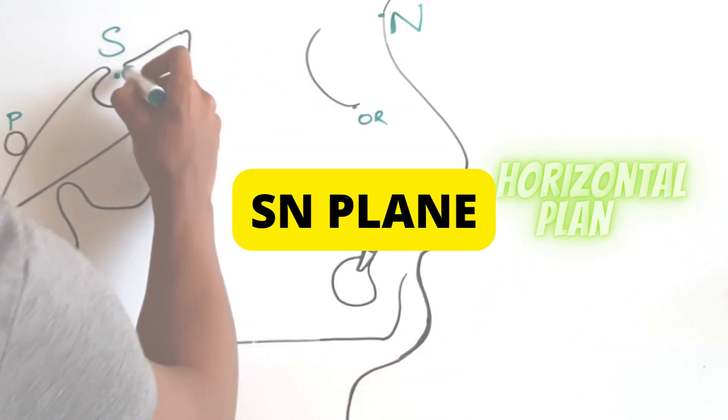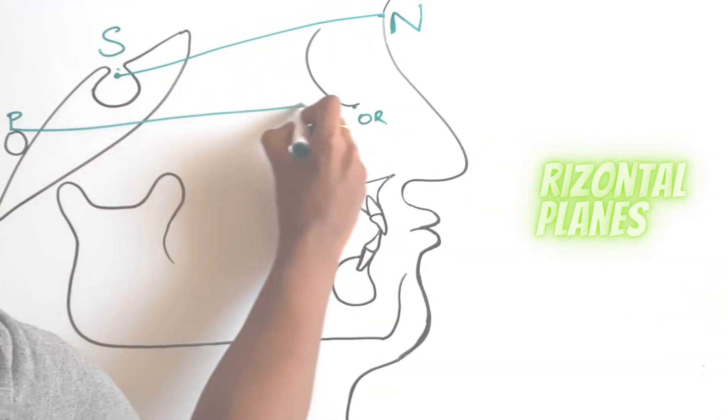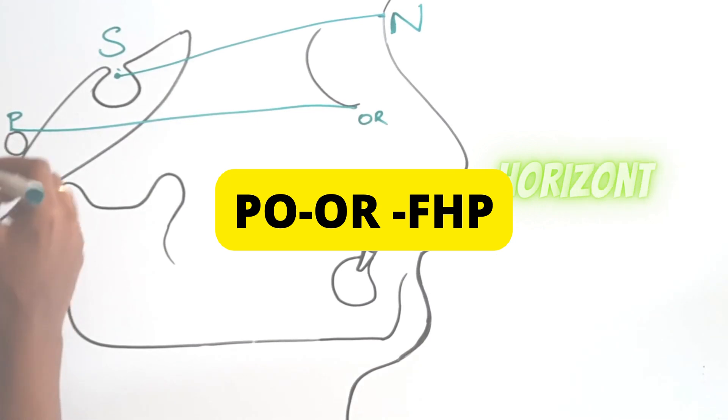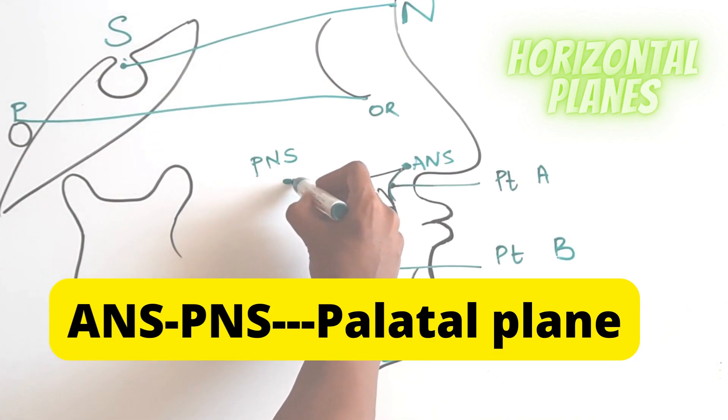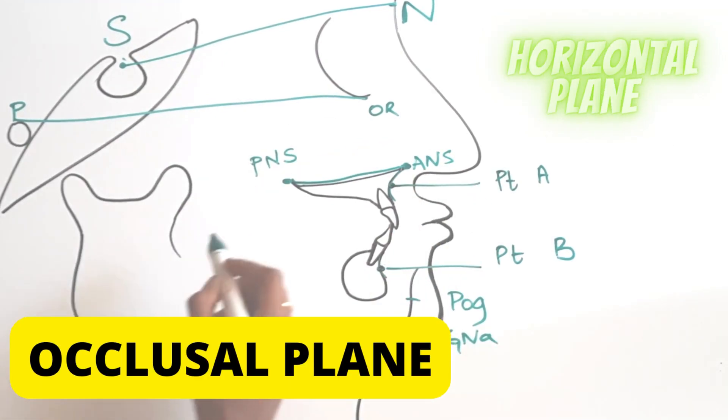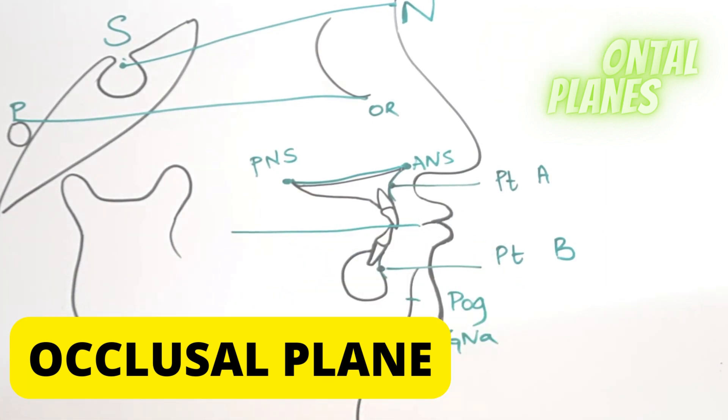Coming to the horizontal plane, we have S-N plane from sella to nasion followed by porion to orbitale which is also called the Frankfurt horizontal plane. We have ANS to PNS which is the palatal plane, and across the occlusal points of the molars, you will see the occlusal plane.